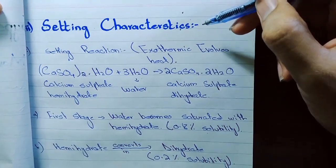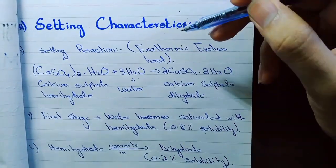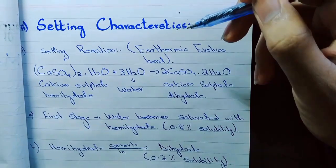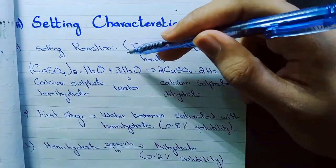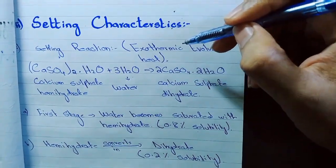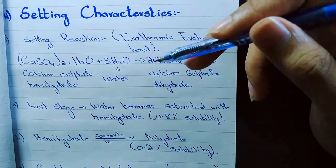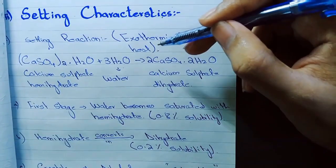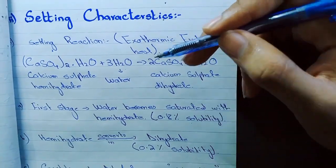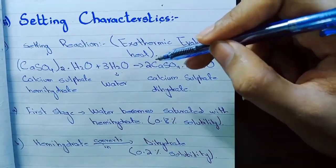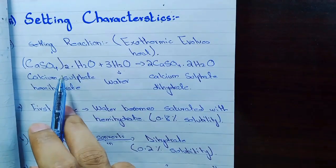Before starting setting characteristics, I want you to know that dental materials is 70% chemistry, 20% physics, and 10% biology in my view. The setting reaction is exothermic — it evolves heat. Chemistry is the study of matter, but I prefer to see it as the study of change. The setting reaction starts with calcium sulfate hemihydrate.